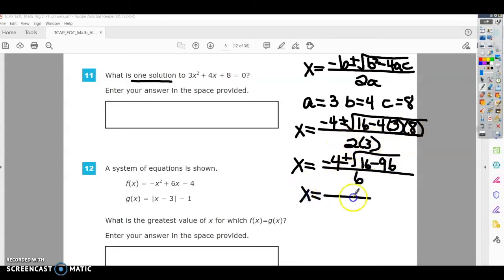And again, I'm still just simplifying. So negative 4 plus or minus. Now I'm going to do 16 minus 96, and that gives me the square root of negative 80.